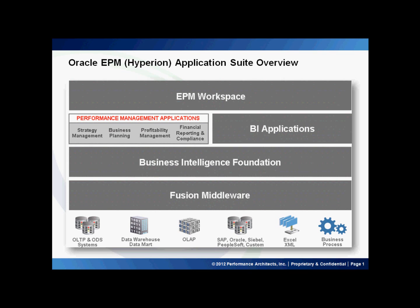Oracle Enterprise Performance Management (EPM), or Hyperion Application Suite, provides four major EPM application areas, which can be accessed through the EPM workspace. These include strategy management for strategic finance and long-term forecasting, business planning for detailed forecasting and budgeting analysis, profitability management, and financial reporting and compliance. This session is part of a series describing the technical and functional updates in EPM version 11.1.2.2.